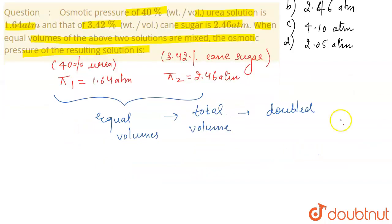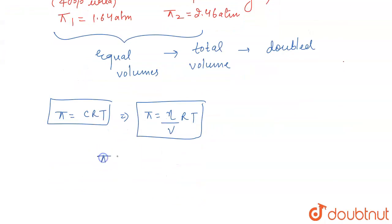And if you talk about a general expression of osmotic pressure that is given as C RT, where C is the concentration, which is actually π is equal to number of moles divided by volume RT. So, from here, what is the relationship that we have between osmotic pressure and volume? Inverse relationship.